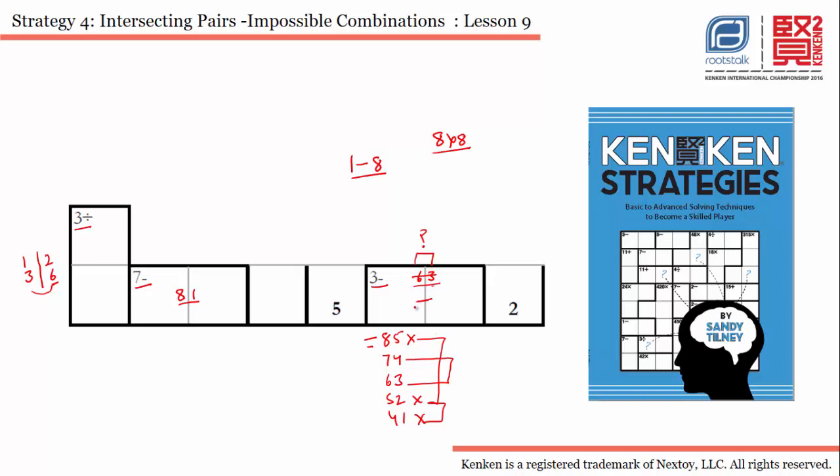We will be using the other option, which is 7 and 4. So this is the answer for this particular cage. We will be using 7 and 4. I don't know about the order at this point of time, but 7 and 4 will be used in this cell.